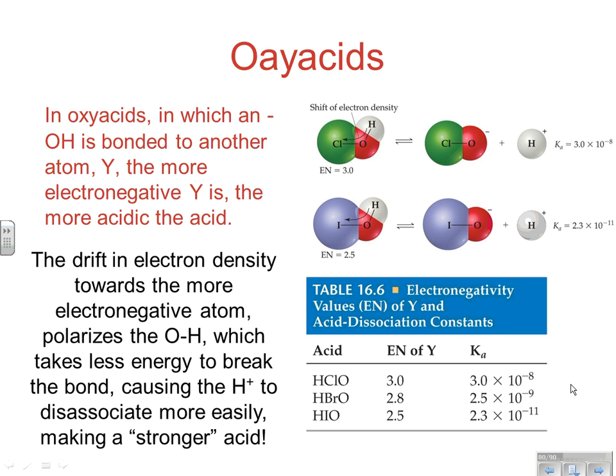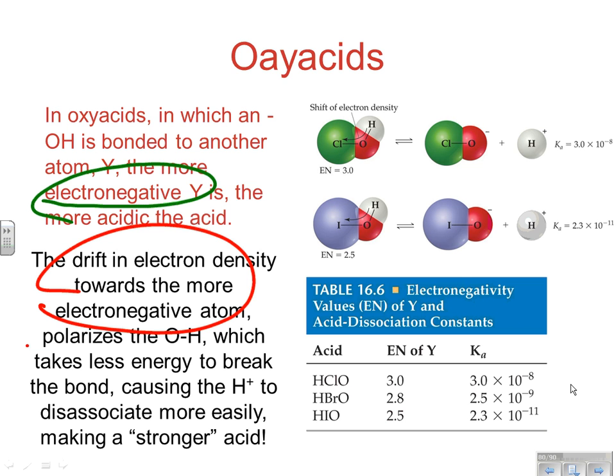Looking at HClO, HBrO, and HIO and their Ka values — the higher the Ka, the stronger the acid. HClO is going to be the strongest acid of the group. Why? Cl has the strongest electronegativity of Cl, Br, and I, causing the greatest shift in electron density, making the OH bond more polarizable, and therefore taking less energy to remove the hydrogen. This is a series of dominoes: electronegativity causes polarizability, which means less energy needed, which means it dissociates more easily, making it a stronger acid.